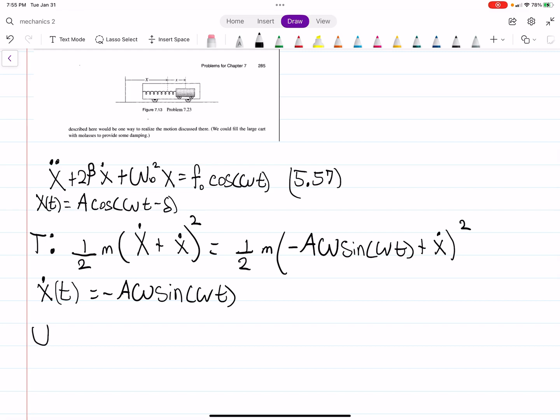So the next thing we want to do is the potential energy. The potential energy of this is what? Well, there is the spring, which we have to consider here. For the spring, it's just going to be one half K X squared. That's just the potential energy for the spring.